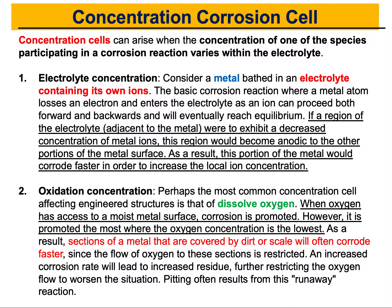I know this slide looks like a lot of information, but I will break it down quickly and go directly to the important points. The definition: concentration cells can arise when the concentration of one of the species participating in the corrosion reaction varies within the electrolyte. If you remember from our previous discussion, for corrosion to happen we need an anode, a cathode, an electrolyte, and the metal. The metal will have a reaction at the anode, and there's a reaction at the cathode — the metal loses electrons, which we call the redox, or reduction-oxidation reaction, like in a battery.